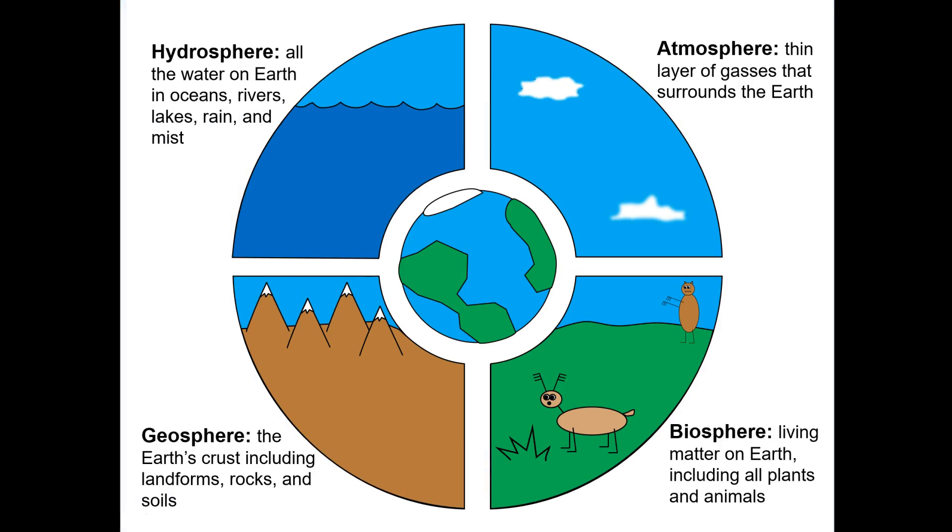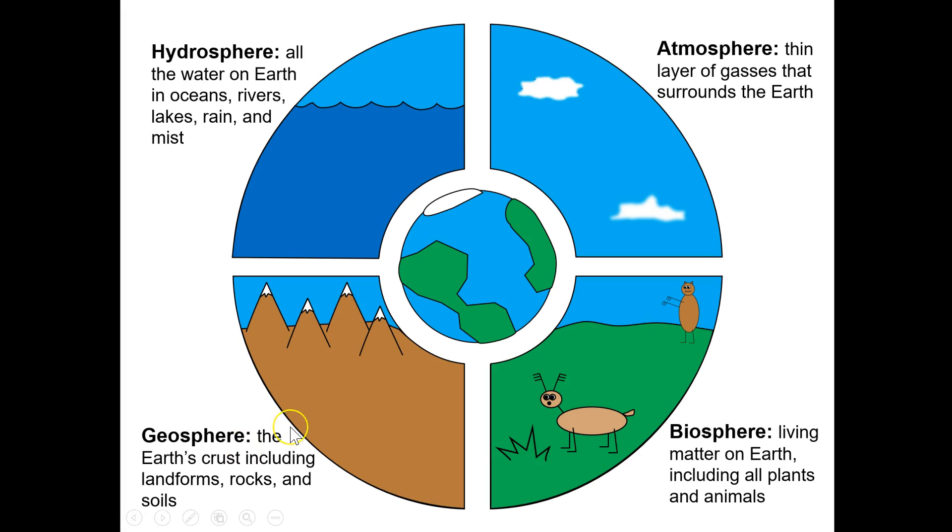Before we begin, let's review from our previous lesson. The Earth has four primary systems. We call these the hydrosphere, which includes all the water on Earth in oceans, rivers, lakes, rain, and mist. The geosphere, which includes Earth's crust, landforms, rocks, and soils. The biosphere, which is all living matter on Earth, including all plants and animals. And last but not least, our topic of the day, the atmosphere, the thin layer of gases that surrounds the Earth.